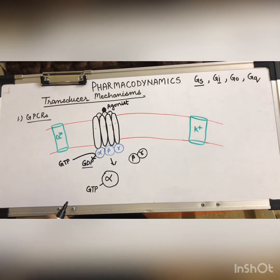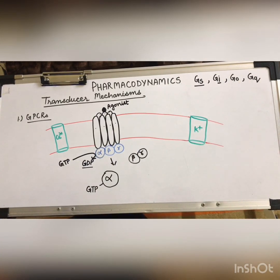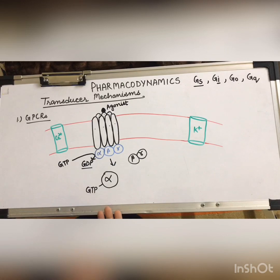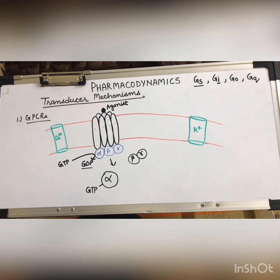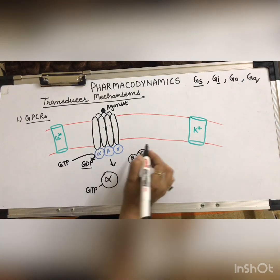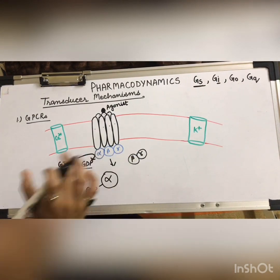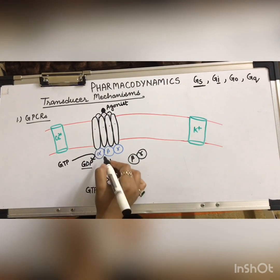Go is responsible for calcium channel inhibition, and Gq is responsible for the activation of phospholipase C. There are three major effector pathways of GPCRs. Adenylyl cyclase activation is carried out by the Gs proteins.